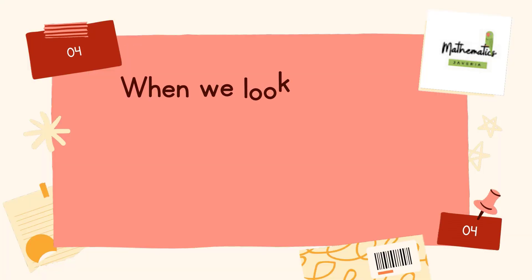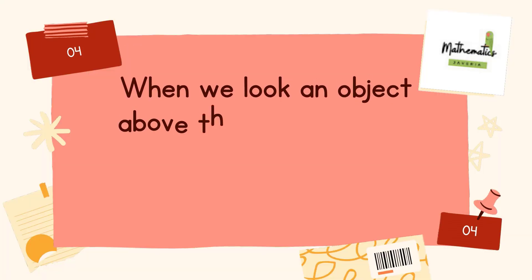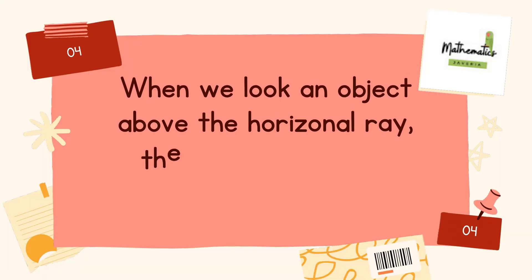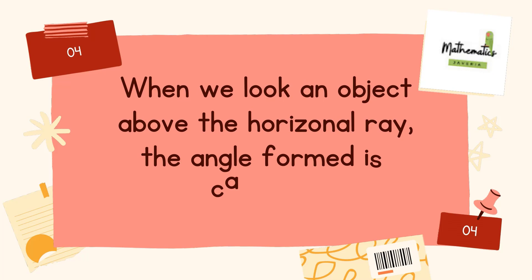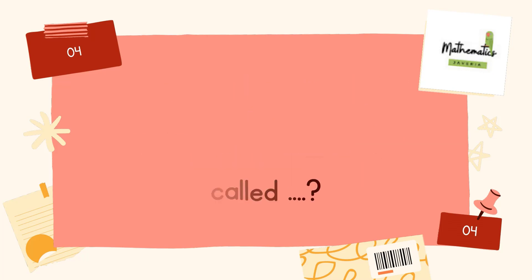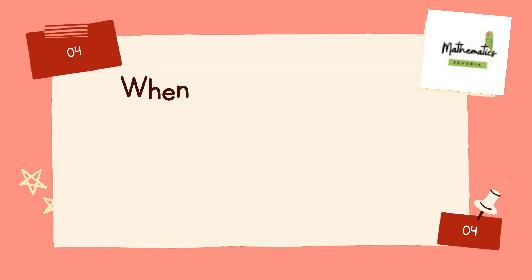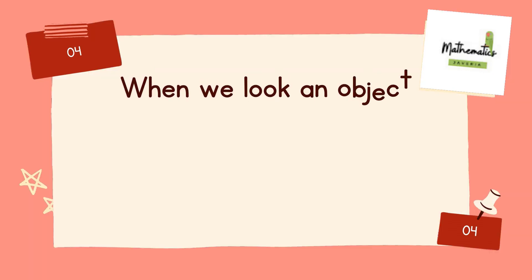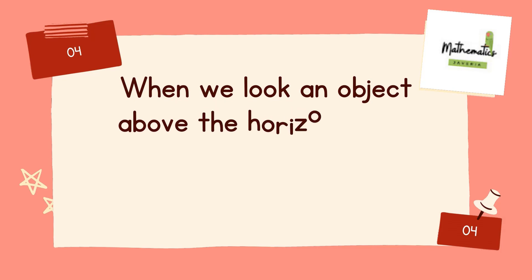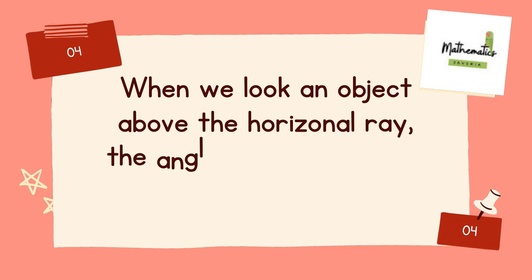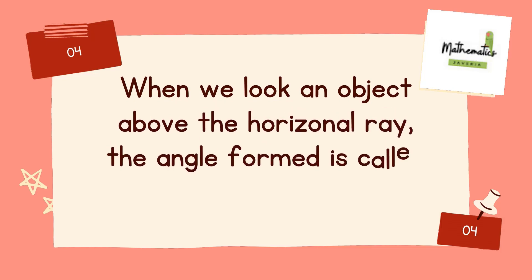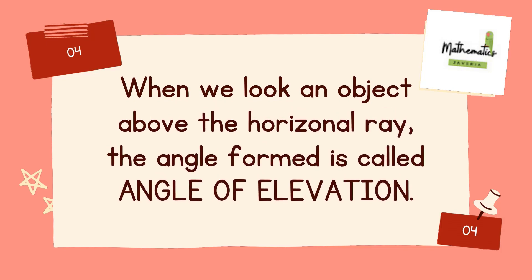Number 4. When we look at an object above the horizontal ray, the angle formed is called? Answer: when we look at an object above the horizontal ray, the angle formed is called the angle of elevation.